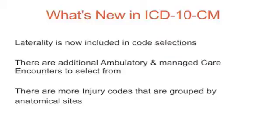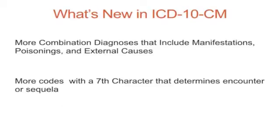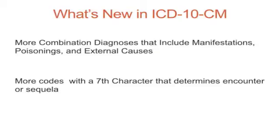What's new in ICD-10-CM? Laterality is now included in code selections. There are additional ambulatory and managed care encounters to select from. There are more injury codes grouped by anatomical sites, and more combination diagnoses that include manifestations, poisonings, and external causes. There are more codes with a seventh character that determines encounter or sequela. There are now full code titles without the need for the fourth or fifth notation indicator.